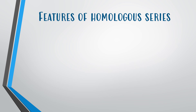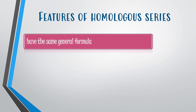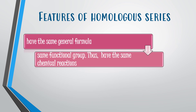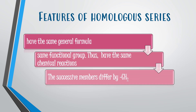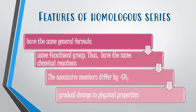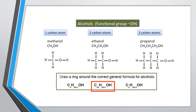There are four features of a homologous series: all members have the same general formula; they have the same functional group, meaning they have the same chemical reactions; successive members differ by a CH2 unit; and there is a gradual change in physical properties. For example, in the alcohol homologous series with hydroxyl functional group OH, we have methanol, ethanol, and propanol, which differ from each other by one carbon atom.